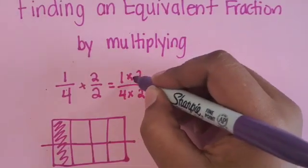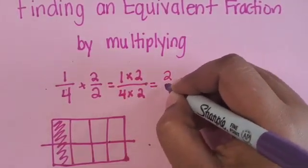So let's solve that. 1 times 2 is 2 and 4 times 2 is 8.